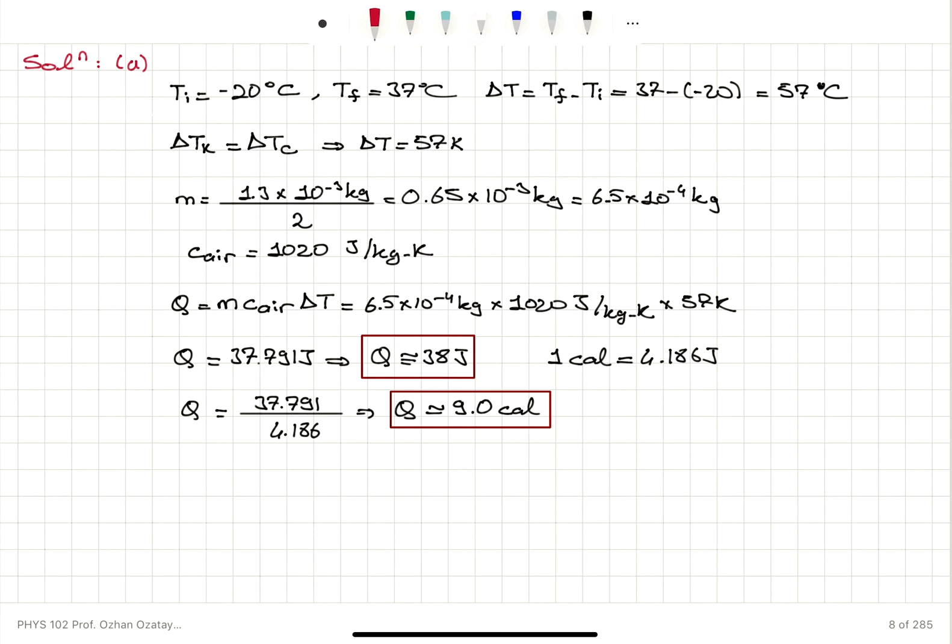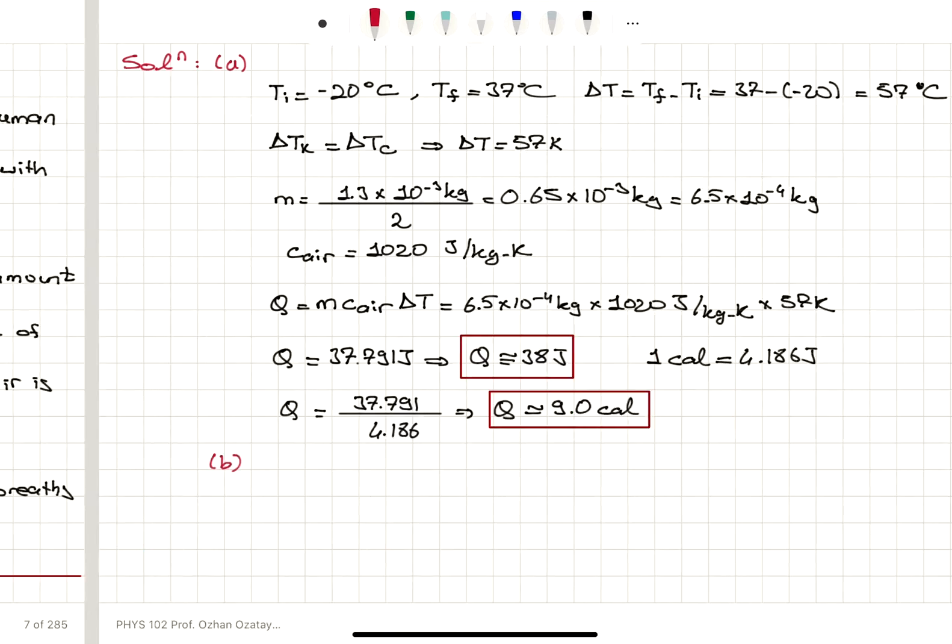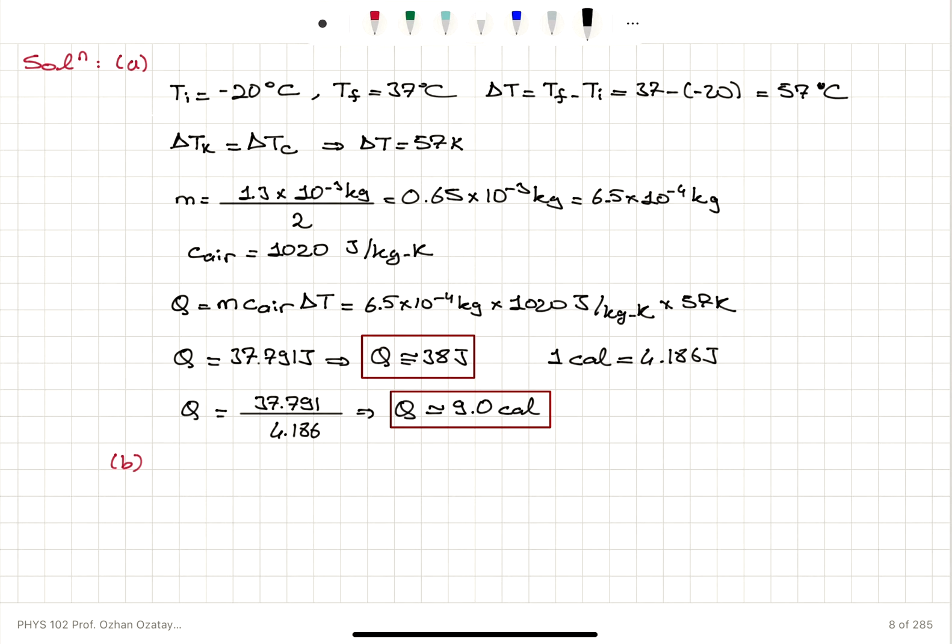Now in part B, we would like to know how much heat we expend in one hour. We have 20 breaths per minute, so how many breaths do we have in one hour? 1 hour has 60 minutes, so 20 times 60 breaths per hour, which gives us 1200 breaths per hour.